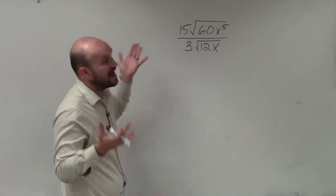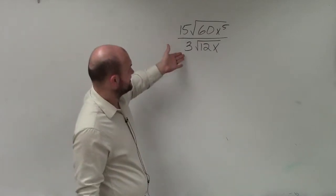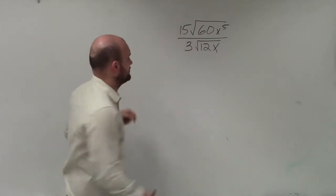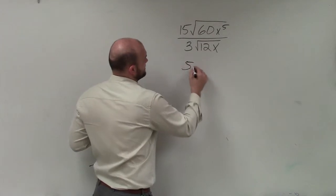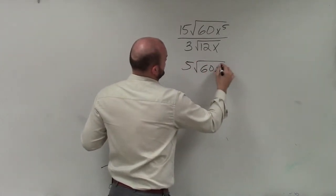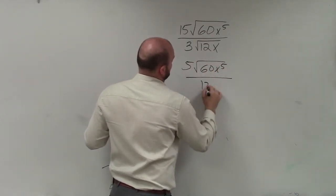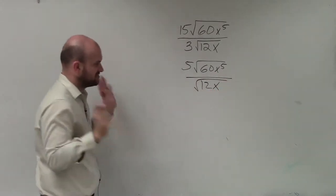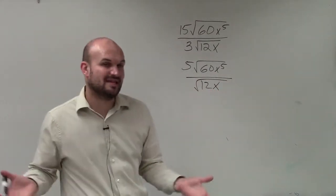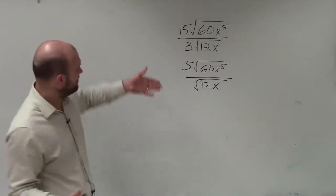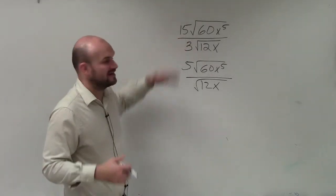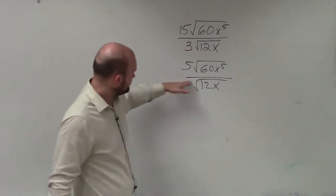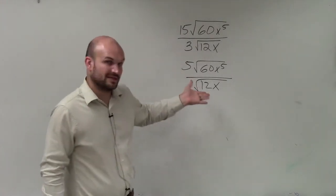Now, the first thing I see is something that can obviously be simplified, which is 15 divided by 3. We know 15 divided by 3 can be reduced down to 5 times the square root of 60x to the fifth divided by the square root of 12x. So get that out of the way first. You can leave it and then simplify all at the end, but that's something very obvious. We know that 3 divides into 15, so it's simplified to 5 over 1, but we don't need to write the 1 there.